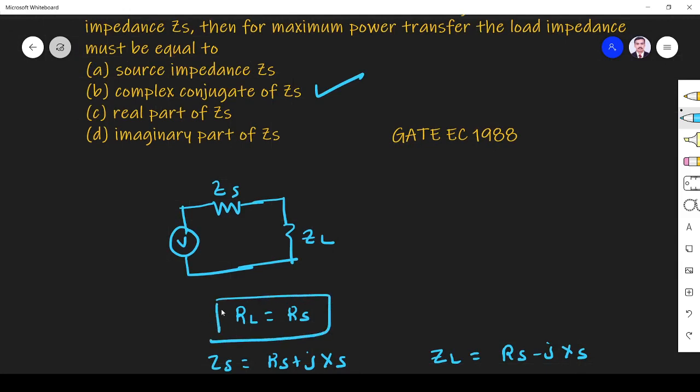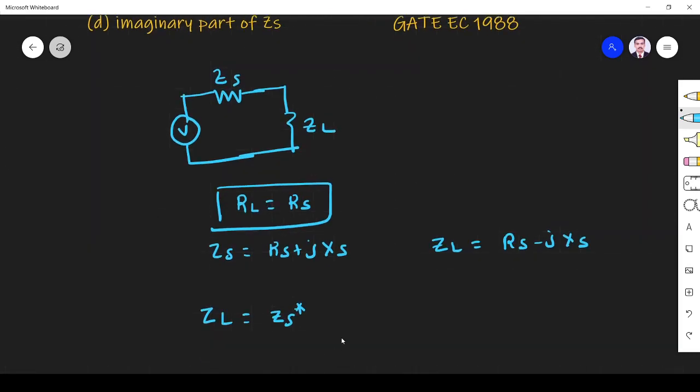If the impedance is only resistance, then we can have RL is equal to RS as the condition. If the impedance is complex, then ZL must be equal to ZS conjugate. Thank you.